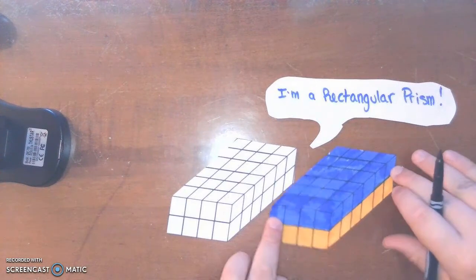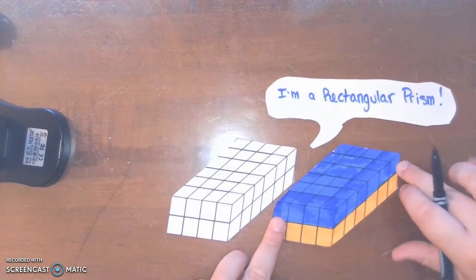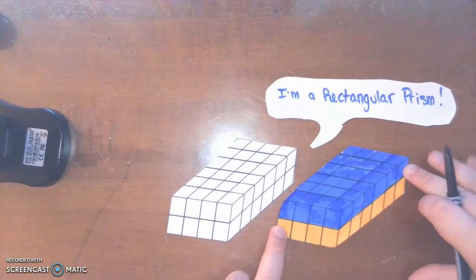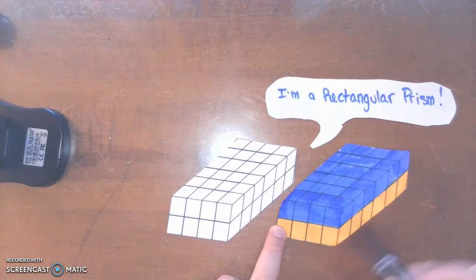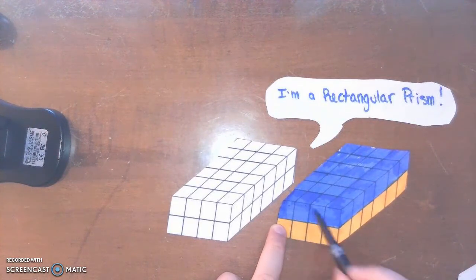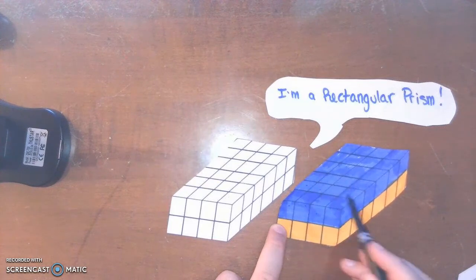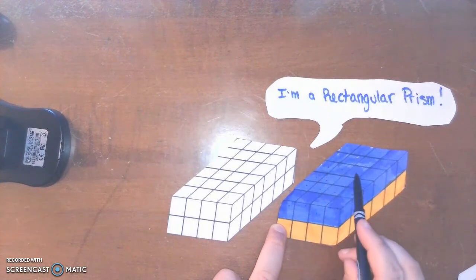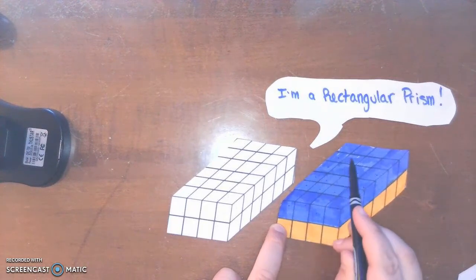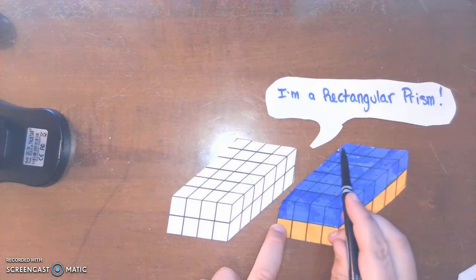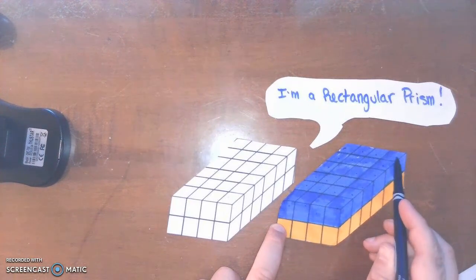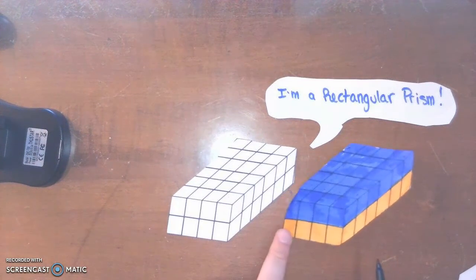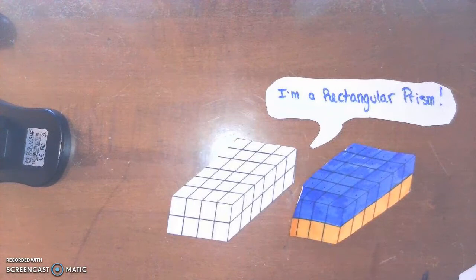Here's another way. In this example, I colored the rectangular prism in such a way that there are two layers. And in each of these two layers, there's one, two, three, four, five, six, seven, eight, nine, ten, eleven, twelve, thirteen, fourteen, fifteen, sixteen, seventeen, eighteen, nineteen, twenty, twenty-one, twenty-two, twenty-three, twenty-four cubes. Well, if I multiply two by 24, I also get 48 cubic units.